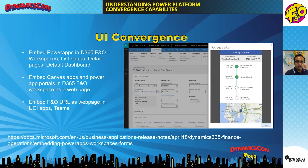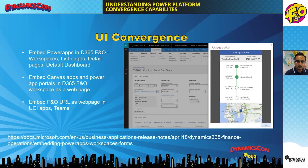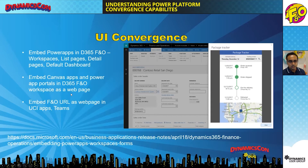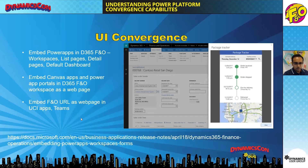For UI convergence, you can embed Power Apps in Finance and Operations at multiple places — on workspaces, list pages, and dashboards. You can embed canvas apps as a workspace, and you can also embed Finance and Operations in Teams.